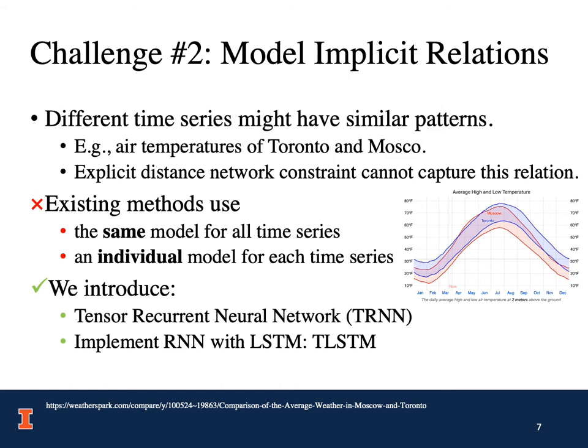The second challenge is how to model implicit relations. Different time series might have similar patterns. For example, air temperatures of Toronto and Moscow are similar to each other. However, the explicit distance network constraint cannot capture this relation, because Moscow and Toronto are far away from each other. Existing methods are also unable to capture these implicit relations, because they either use the same model for all time series, or use an individual model for each time series. To solve this problem, we introduce a tensor recurrent neural network, TRN for short, and implement TRN with LSTM. Therefore, we have TLSTM.